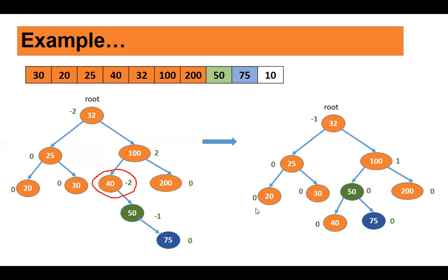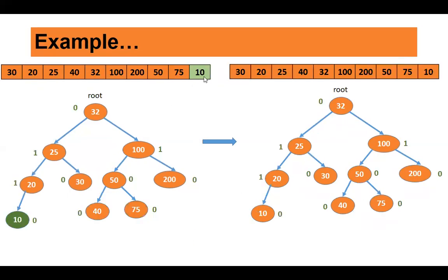The last node to be added is 10. Compare with 32 — less than 32, go left. Less than 25, go left. Less than 20, so 10 becomes the left child of 20. Calculate the balance factor of the tree: the root has balance factor 0 because the left subtree height is 3 and the right subtree height is also 3. Balance factor of 100 is 1 and 25 is also 1. Even after inserting 10, the tree is balanced. This is the final AVL tree created using these keys.